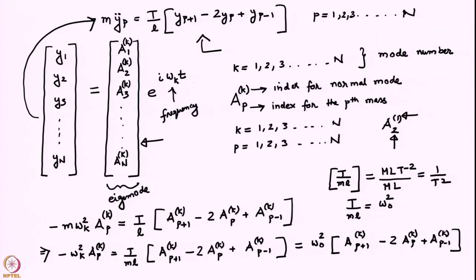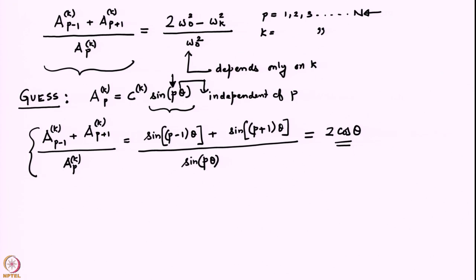These were n coupled linear ordinary differential equations on which we impose the normal mode approximation. Here we are trying to solve the system and determine the eigenmodes and eigen frequencies of the system without writing down matrices, which is why we have kept the total number of masses in the system as N, which could be any integer. Once we substituted the normal mode approximation, we obtained algebraic equations and we are trying to find solutions to those algebraic equations.